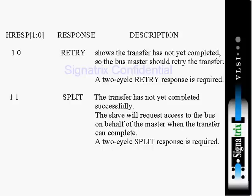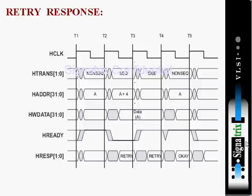If it is a split case, what the slave will do is issue one signal to the arbiter indicating that it is having some problem. After some time, it will issue one more signal. The next diagram will indicate how the retry response is happening.